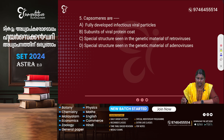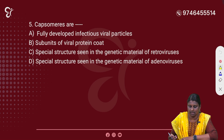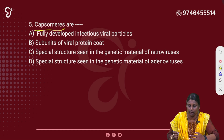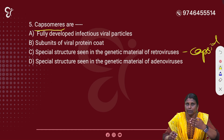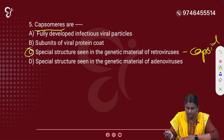Next question on the antigenic material of Retroviruses. We have a protein coat called the Capsid. Capsid is a protective structure made of subunits called Capsomeres. Capsomeres are protective in function and are special structures seen in the genetic material of Retroviruses.